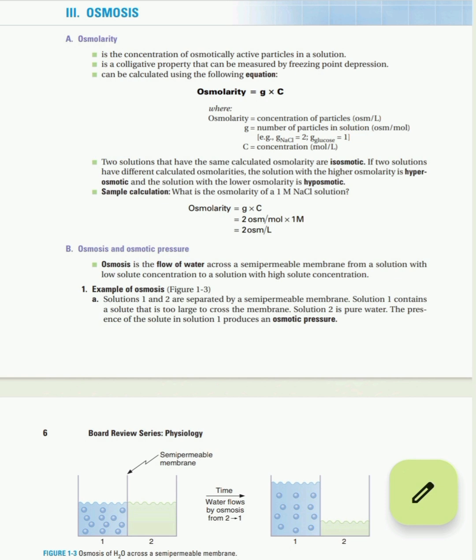Solution two is pure water. The presence of solute in solution one produces an osmotic pressure. There is an osmotic pressure difference across the membrane because solution one has solute but solution two is only pure water. So water will flow from solution two, which has no solute and lower osmotic pressure, to solution one, which has solute and higher osmotic pressure. Water always flows from lower osmotic pressure to higher osmotic pressure.